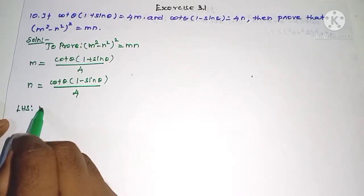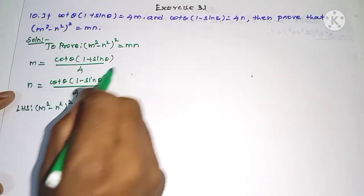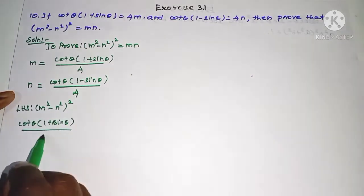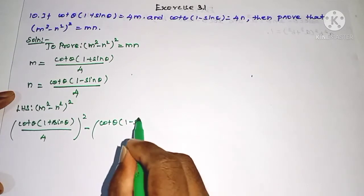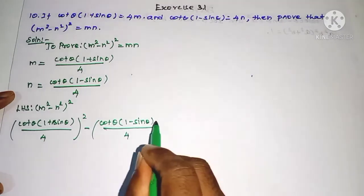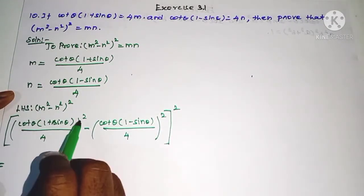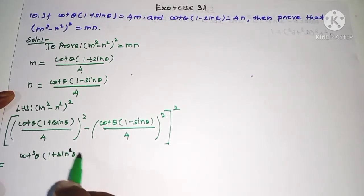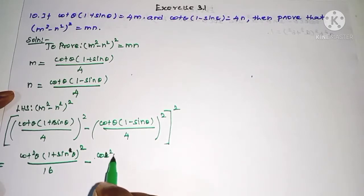LHS is equal to (m² - n²)². This is [cot θ into (1 + sin θ) / 4]² minus [cot θ into (1 - sin θ) / 4]² — the whole square. Expanding: cot²θ (1 + sin θ)² / 16 minus cot²θ (1 - sin θ)² / 16.